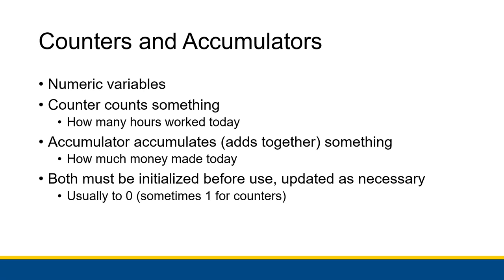Usually you're going to initialize both of them before use, and then you update them as necessary, often within a loop, as you keep on calculating new values to add into this total that you're holding onto. Usually you're initializing it to zero, but sometimes counters do start at one — it depends on how you're actually doing the counting. For example, if you're inside of a loop, do you start it at zero and then add one to it as soon as you have actually done the counting?